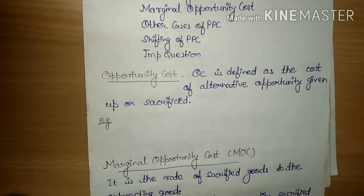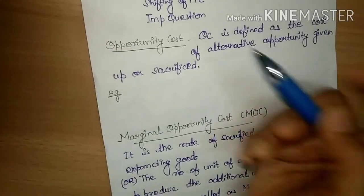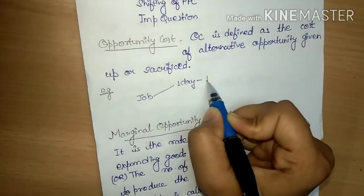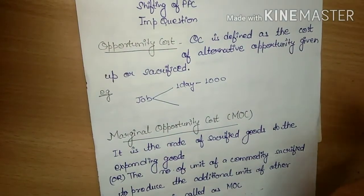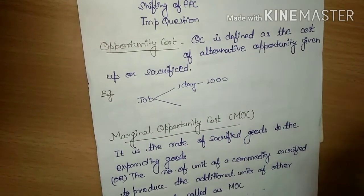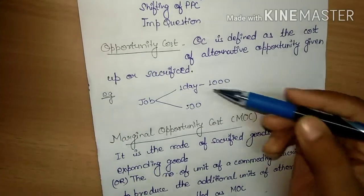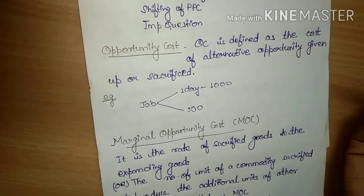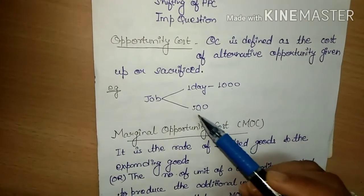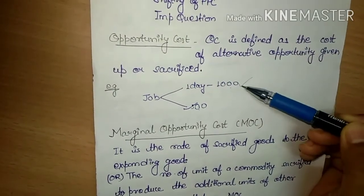Jaise pehle aapko previous videos mein example de chuke hain — aapke paas koi bhi do cheezein hain. Aapko hum iska real life example dete hain: jaise ki aap job karte hain, aur aapki per day salary 1000 rupees hai. Aap soch rahe hain ki aaj office na jaayein aur uske badle apni family ke saath time spend karein. Agar aap family ke saath time spend karte hain, toh cinema hall jaayein ya hotels jaayein — total kharch 500 rupees. Toh aapke paas do options hain: ya toh office jaate hain aur 1000 rupees milte, ya family ke saath jaate hain aur 500 kharch hote. Toh aapne jo cheez choose ki uske alaawa jo cheez sacrifice ki, iske jo cost rahegi, ise hi hum opportunity cost kehte hain.